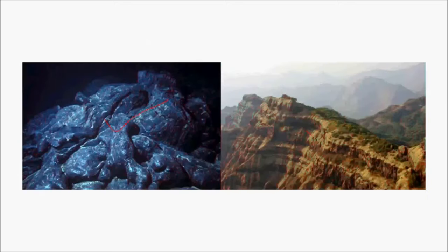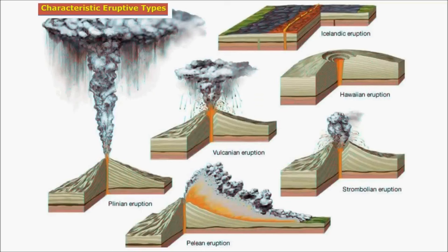Columnar structures form during the process of plateau formation, as seen in the Deccan Plateau. Based on the kind of eruptions, volcanoes are further divided into Plinian, Pelean, Vulcanian, Strombolian, Hawaiian, and Icelandic eruptions. Icelandic eruption is associated with less violent or completely non-violent volcanism, with outflow of basaltic lava from a long narrow fissure, producing low-silica, less viscous lava that flows long distances forming flat landforms like plateaus. Examples include the Deccan Plateau and Iceland near the Arctic Circle.